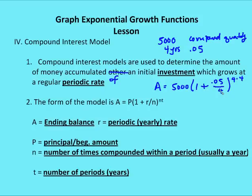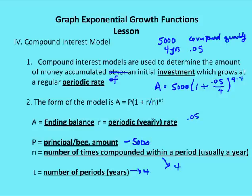So the ending balance equals 5,000 times one plus 0.05 over 4, raised to the 16th power — that's four times compounded per year times four years. The number of times compounded is four, the number of years is four, the initial investment is $5,000.